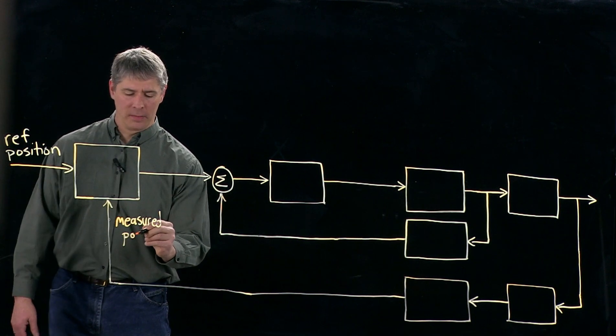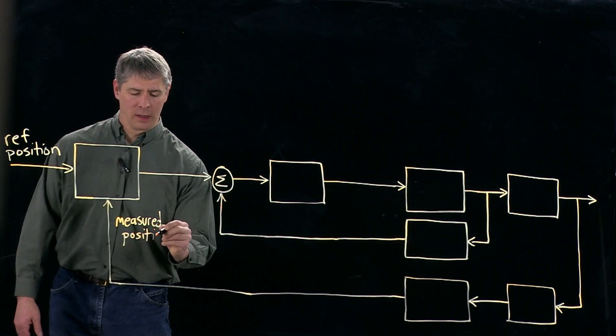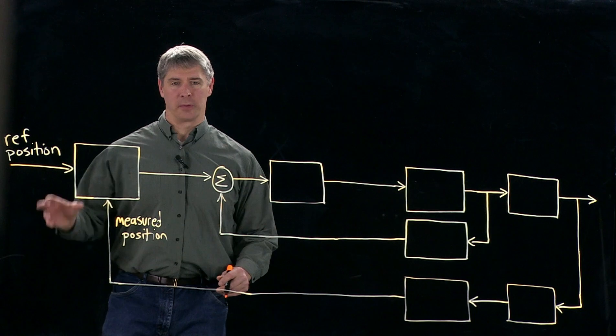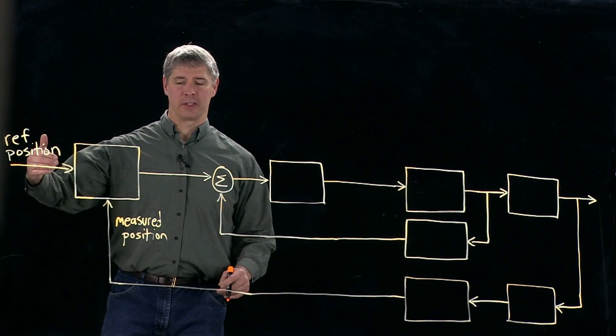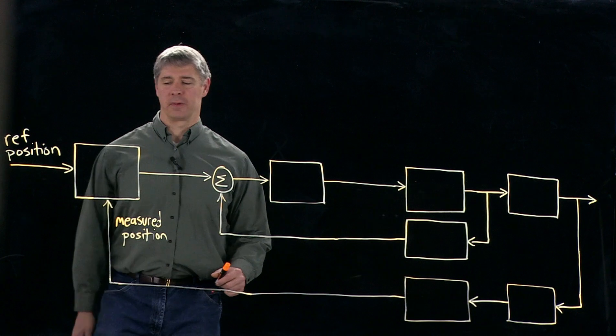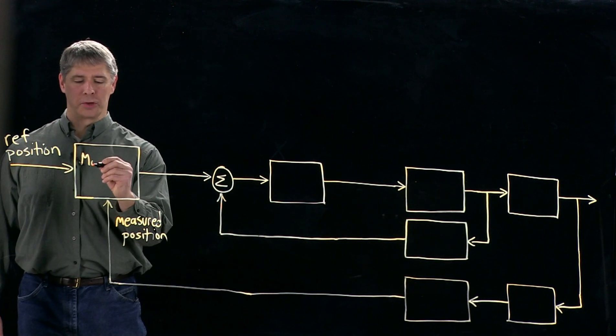The reference is coming from whatever we want. Maybe we're running a CNC machine and we're trying to make the tool follow a certain path. So that's the reference position coming in. We have a measured position, and then here we have the motion controller.